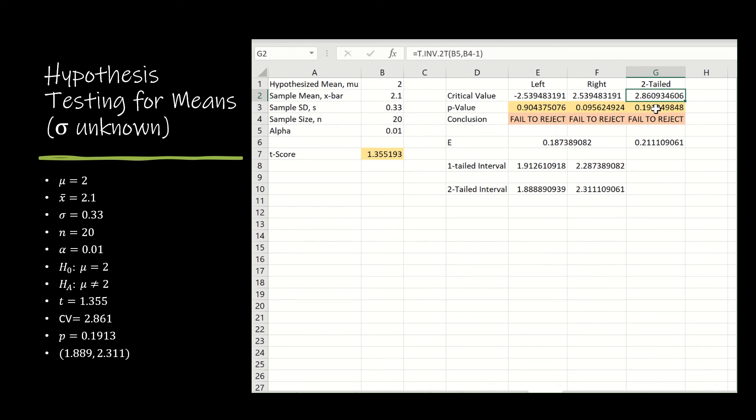For the P value, remember, this one's a little tricky. So before I show you what I've done, let's recall, if my T score were negative, then I would need to find the area to the left of the negative T score.